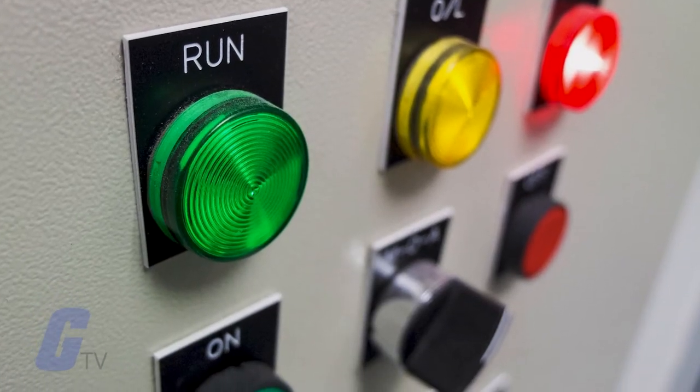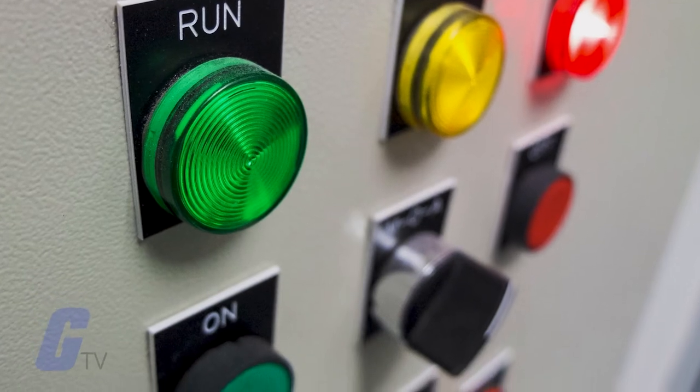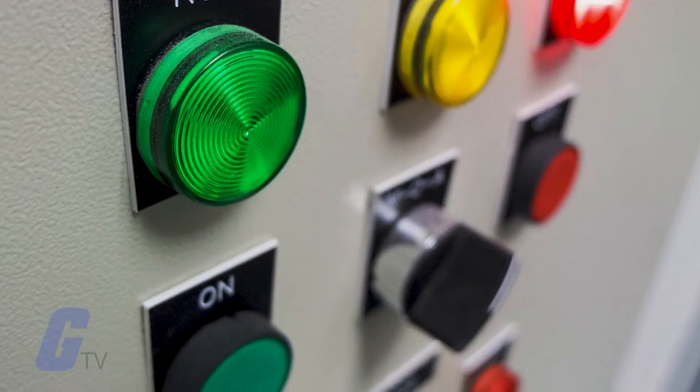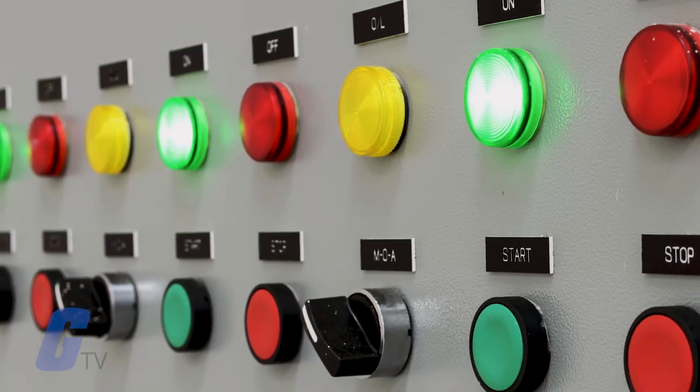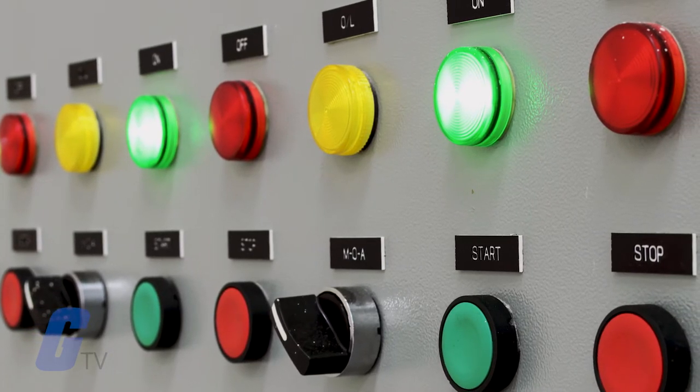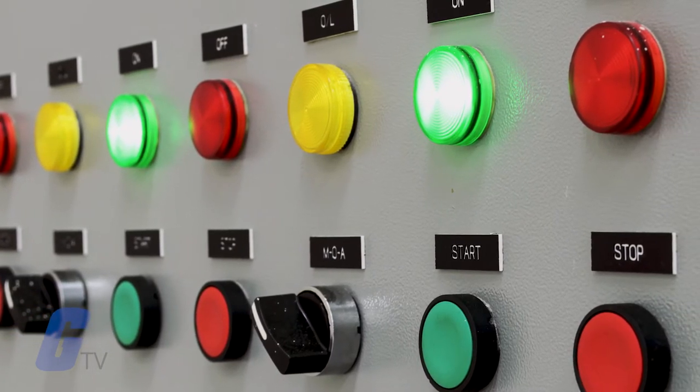Pilot lights are electrical indicators that show when electrical power is available or when a machine is operating. They typically use LEDs to provide the light, but incandescent bulbs may be used in older devices.